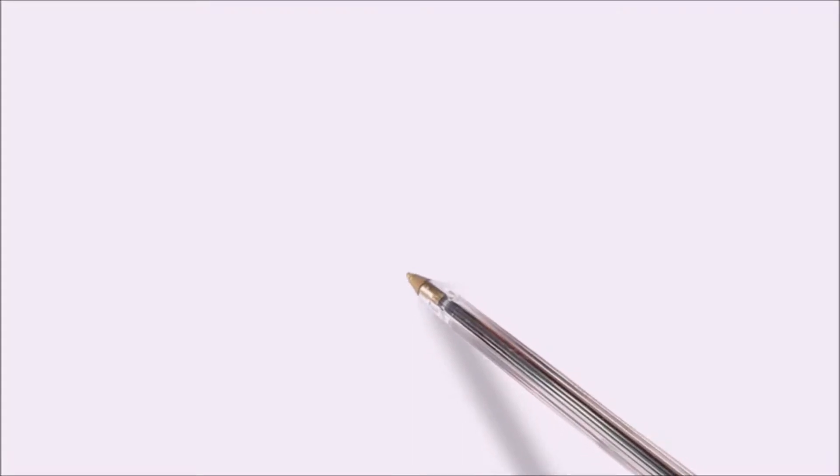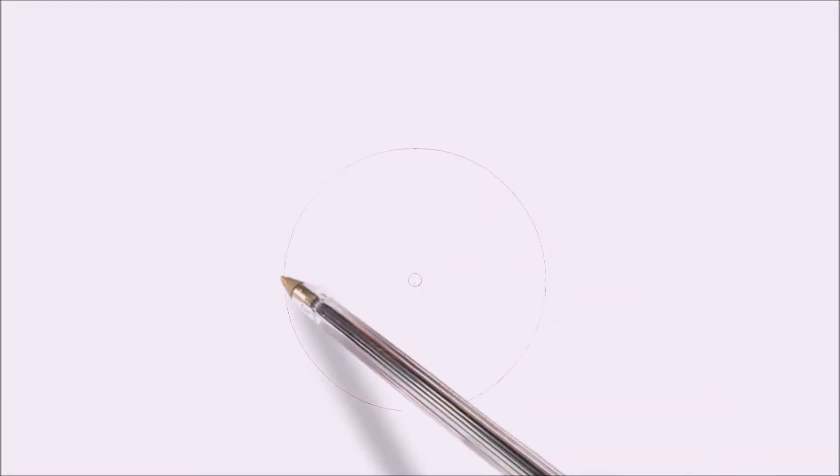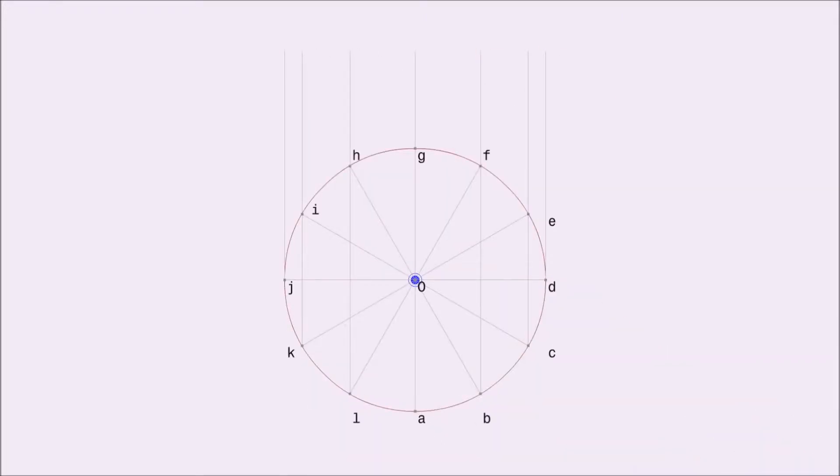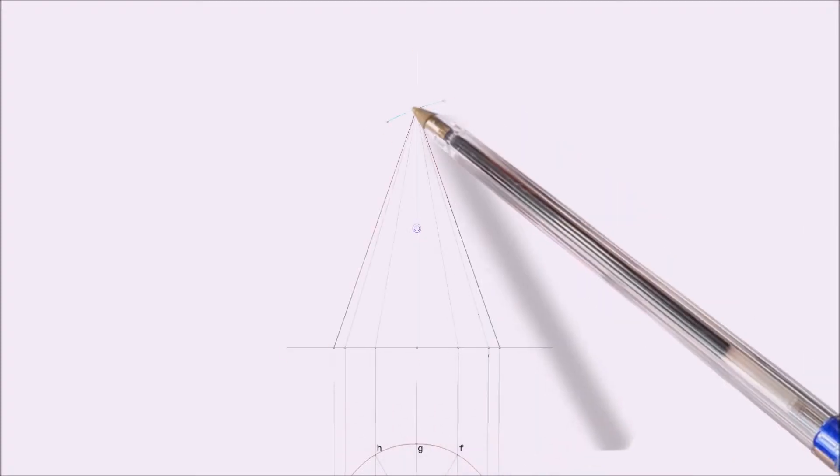Draw a front view and top view of cone with 40 mm diameter and slant height 60 mm. Divide the top view into 12 equal parts and draw the corresponding generator lines.